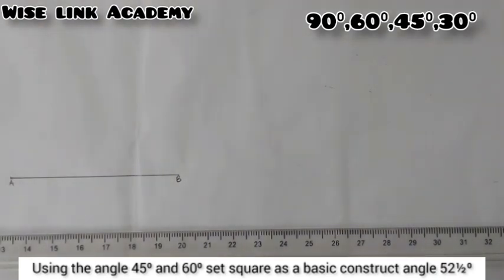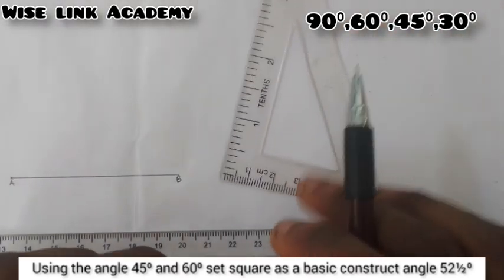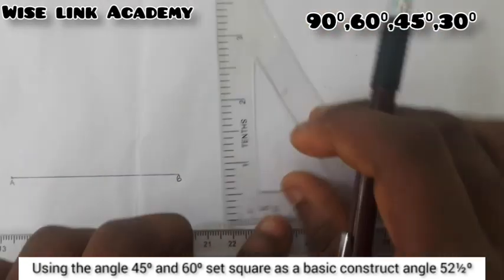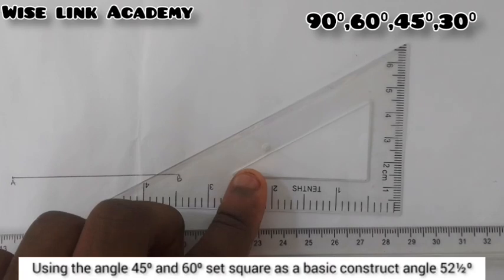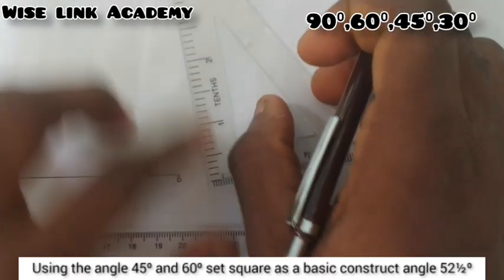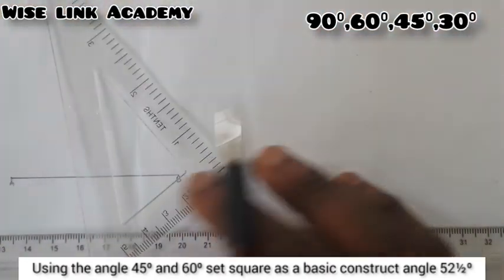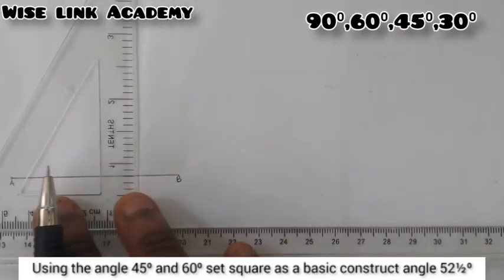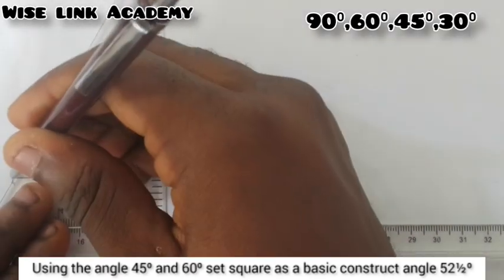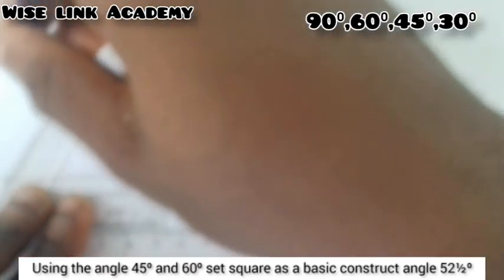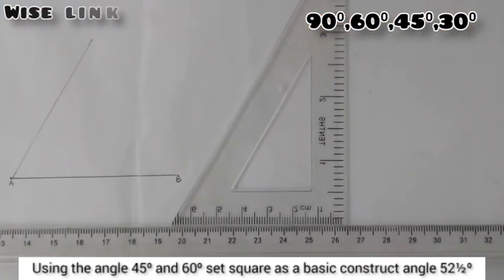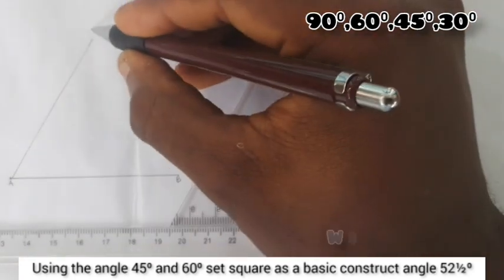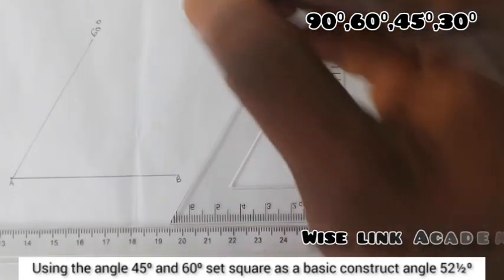So with the aid of my set square, I will take my set square this way. This is 60. So what we just need is 60 and 45. So I'll take it this way. So I'll just draw a faint line. A faint line because we don't really need that angle. So I'll call this here angle 60 degree.